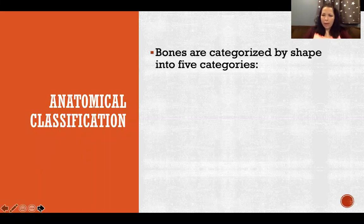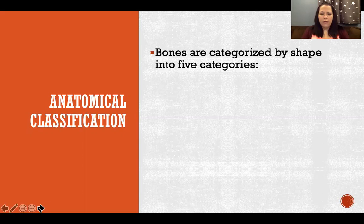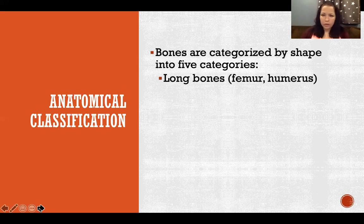Now, anatomical classification of bones. When we talk about anatomical classification of anything, we're talking about how we classify structures based on how they're built. Physiological classification would be classifying something based on what it does or its function. So anatomical classification covers how it's designed, what it's made of, how it's built. We have five categories of bone classifications. Long bones are your stereotypical bone — the femur, humerus, phalanges, and so on.